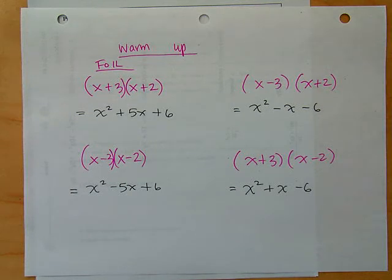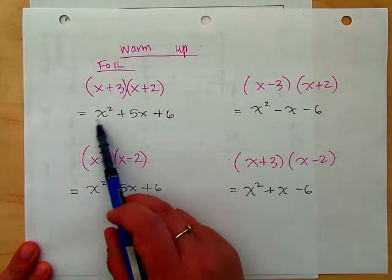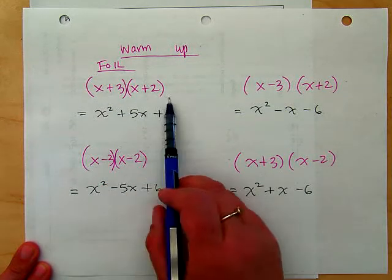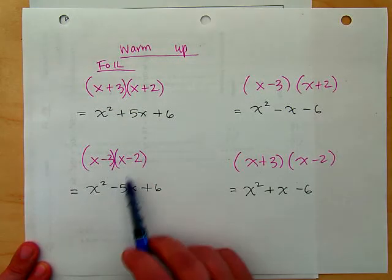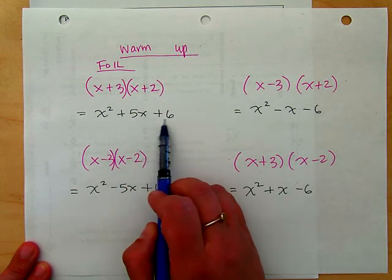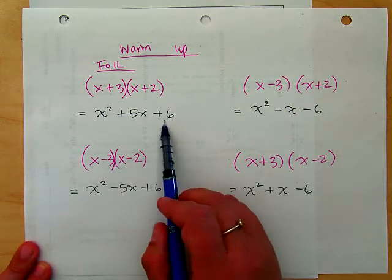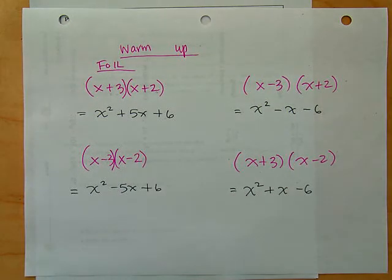Let's look at these problems that we foiled and talk about any patterns we noticed. Here I have a binomial times a binomial — we foiled it to get the product. What do we notice? Where are we getting the five from, where's the six coming from? Three times two gives us six, and three plus two gives us five, because the middle terms are like terms and they add together.